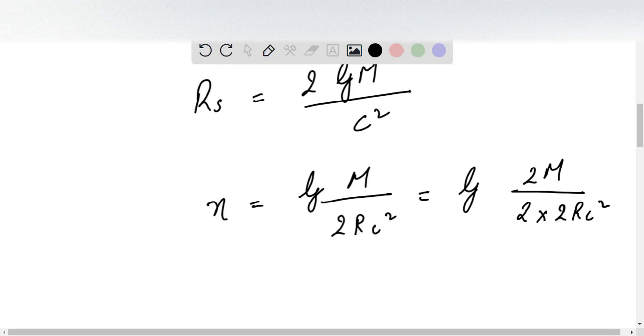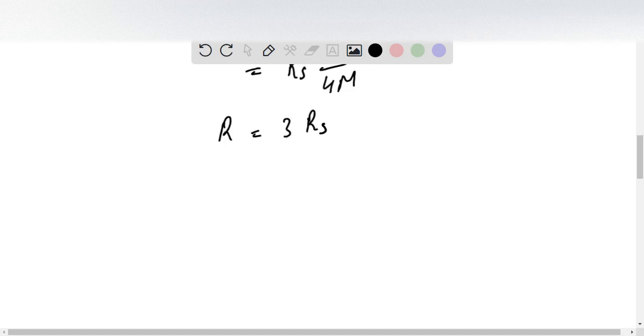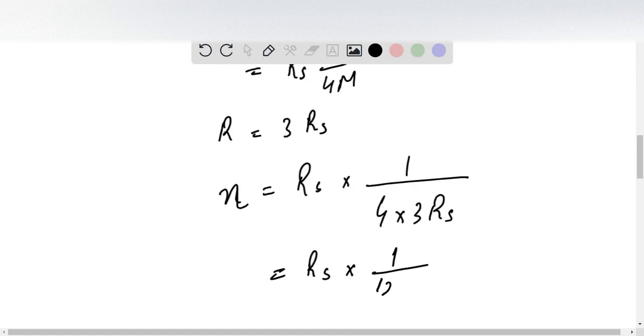Now replace the value of the radius. For R = 3R_S, we get η = R_S/(4×3R_S) = 1/12.